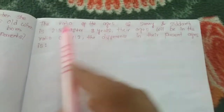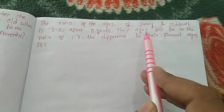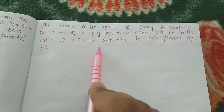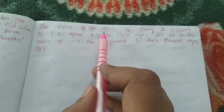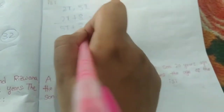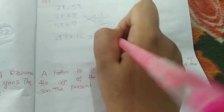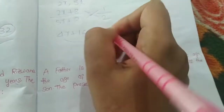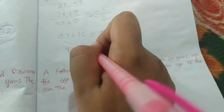Next question: the ratio of the ages of Sunny and Siddha is 2 to 5. After eight years their ages will be in the ratio of 1 to 2. The difference in their present ages is what? Sunny is 2x and Siddha is 5x. After eight years their ratio is 1 to 2, which means (2x plus 8) divided by (5x plus 8) equals 1 by 2. Solving: 4x plus 16 equals 5x plus 8, so x equals 8.